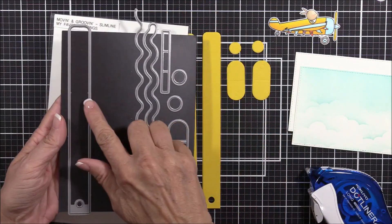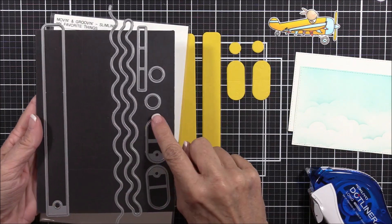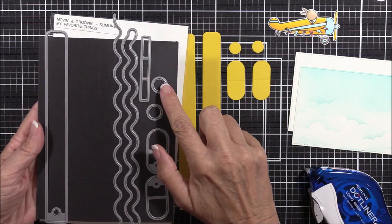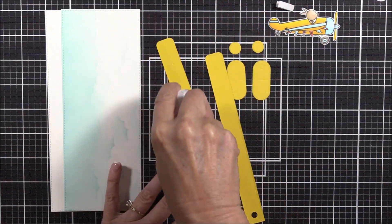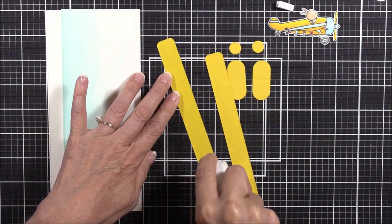Next, I die cut two pull tabs, two tabs, and two half-inch circles from Lemon Drop Cardstock using the Movin' and Groovin' Slimline Dynamics. I also die cut a pull tab collar from Text-weight Printer Paper.